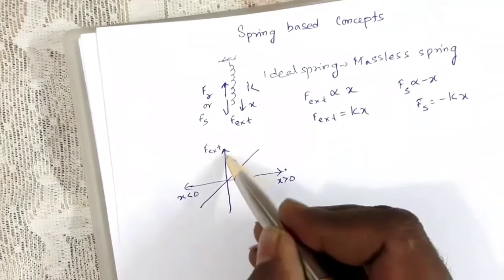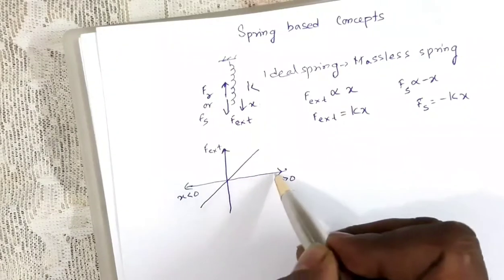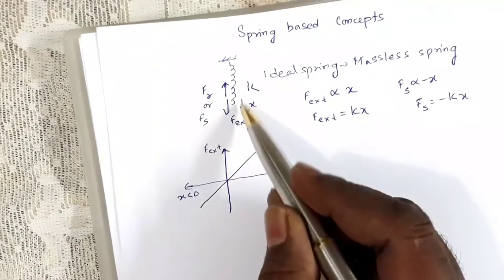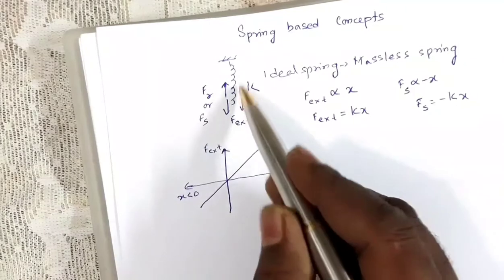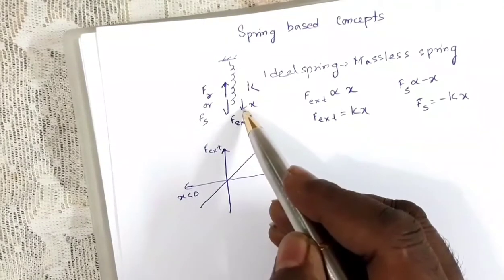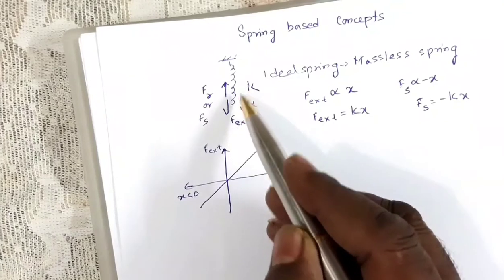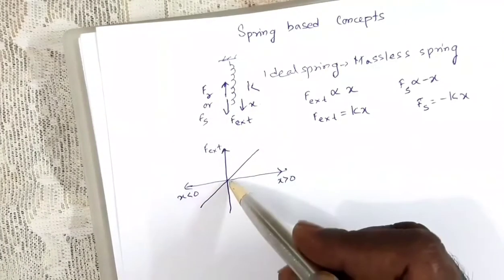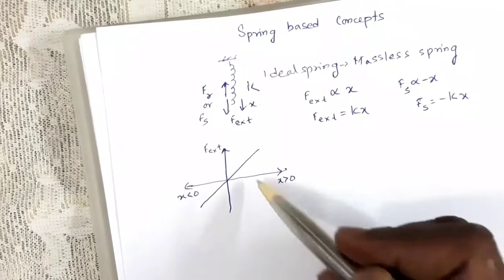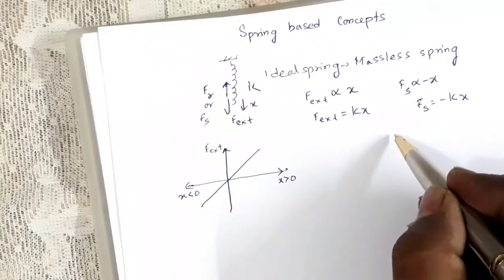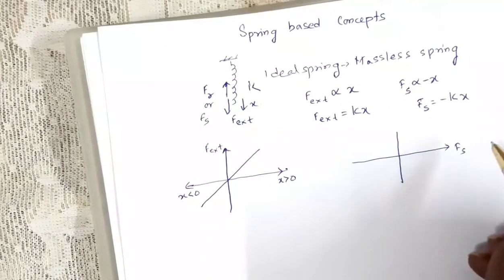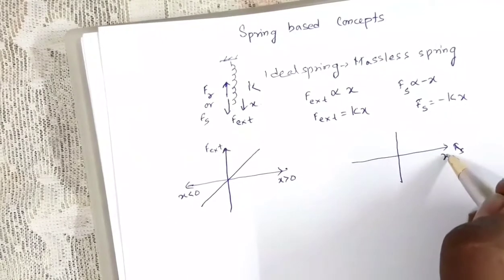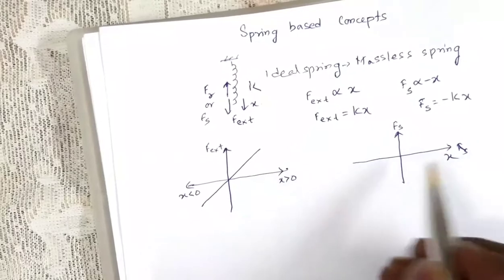This straight line passes through the origin. In the first quadrant, x is positive and external force is also positive. If we compress the spring, x will be in the upward direction and the external force will also act upward, so x is negative and external force is also negative. This gives us the complete graph between external force and extension or compression.